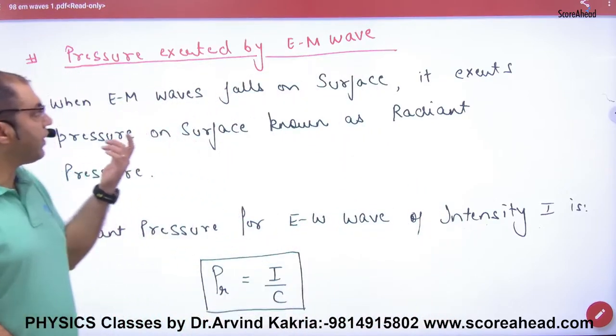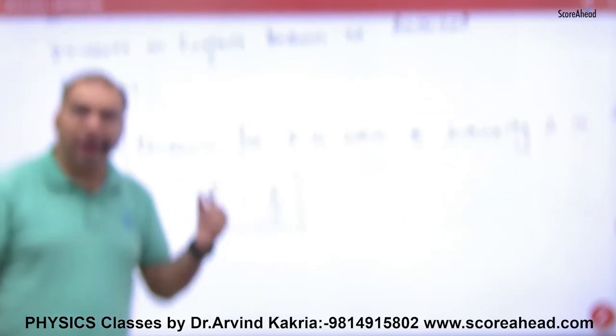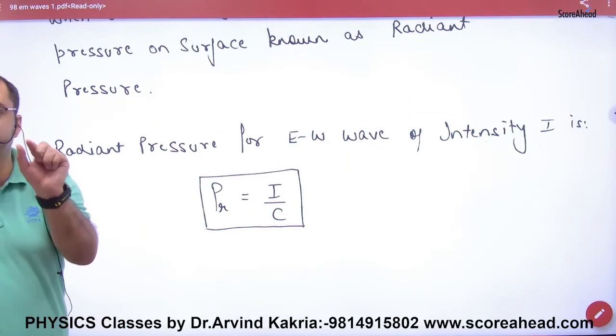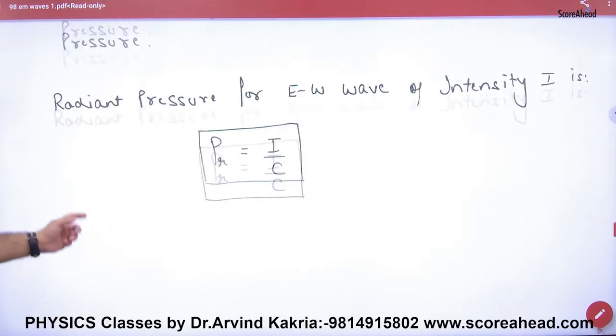That pressure we call it radiant pressure. So this pressure we call it radiant pressure. The pressure EM wave and radiant pressure. The formula you will write I by C, where I is the intensity of EM wave, I by C.